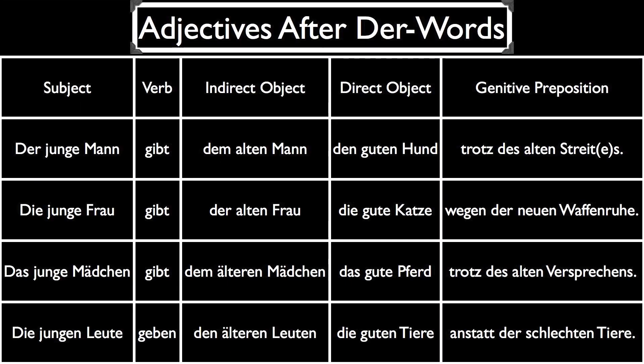Now let's try some example sentences using adjectives after der words. I used uniform sentences so that you can see what the changes look like between the different cases and genders. Each one of these sentences has a subject, a verb, an indirect object, a direct object, and a genitive preposition — giving you nominative, dative, accusative, and genitive cases in order. Our first example uses all masculine nouns: Der junge Mann gibt dem alten Mann den guten Hund trotz des alten Streites — The young man gives the old man the good dog in spite of the old fight.